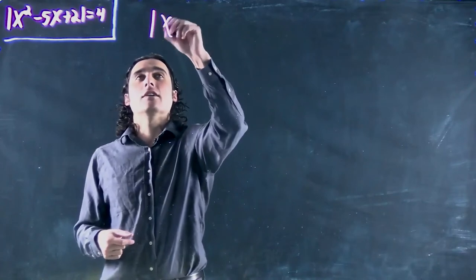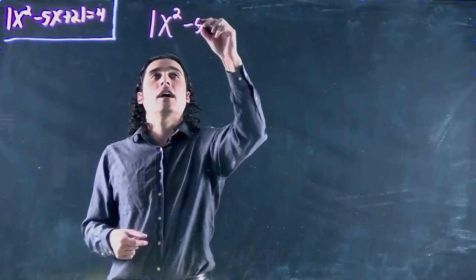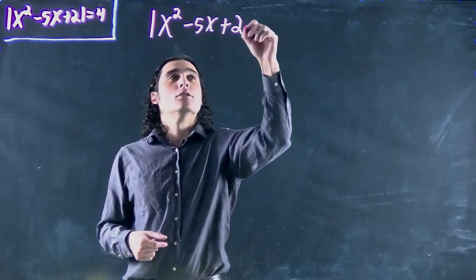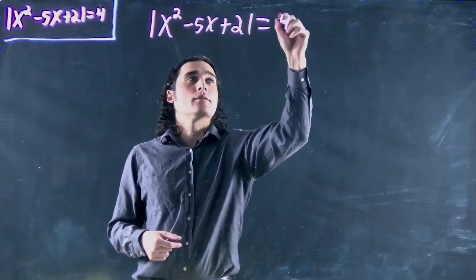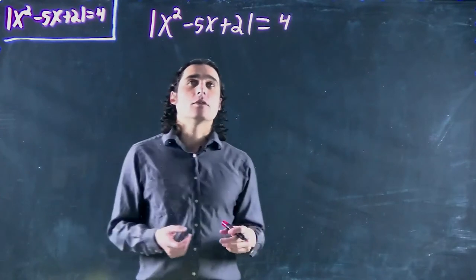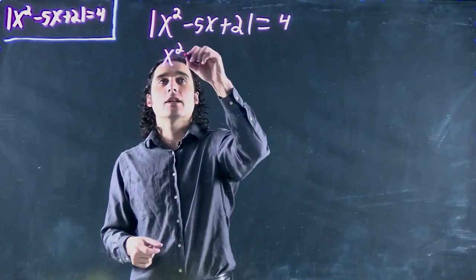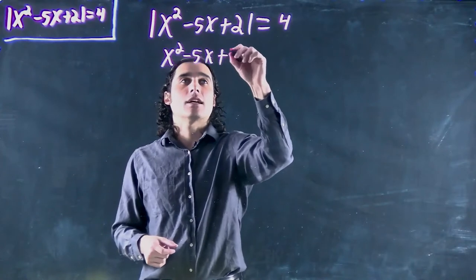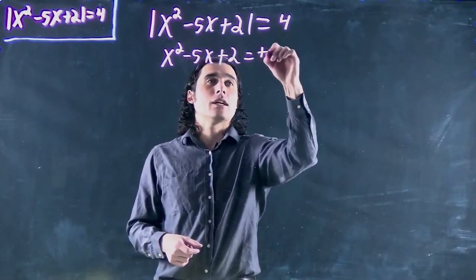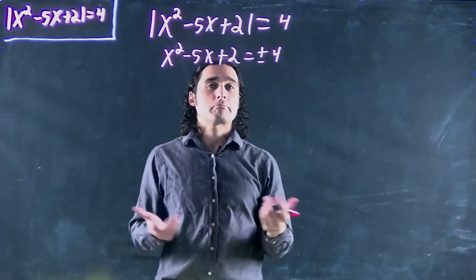So what do we got? Absolute value of x squared minus 5x plus 2, and that's equal to 4. Great. So want to get rid of the absolute value. As always, I get plus or minus on the other side. x squared minus 5x plus 2 equals plus or minus 4.